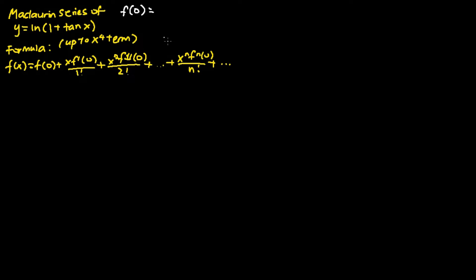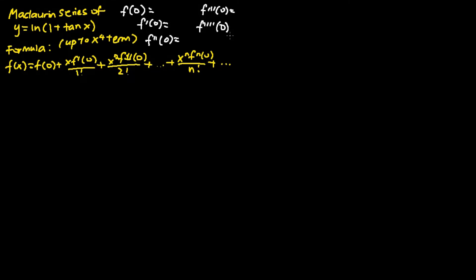F(0) is the function evaluated at x equals 0. F'(0) is the function differentiated once and evaluated at x equals 0. F''(0) is differentiated twice, F'''(0) three times, and F''''(0) four times, all evaluated at x equals 0. For this problem, we will express the Maclaurin series of ln(1 plus tangent x) up to and including the x to the power of 4 terms.